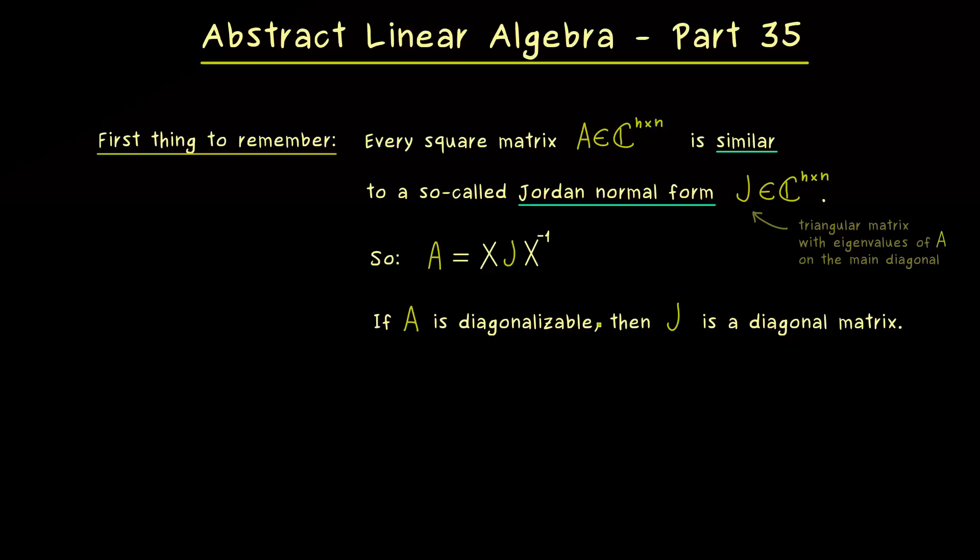In other words, you can just remember the Jordan Normal Form brings us as close as possible to a diagonal matrix. And in order to see that, let's immediately look at some examples. And let's keep it simple with a 2 times 2 matrix.